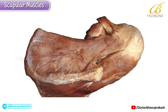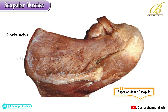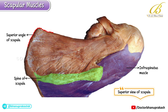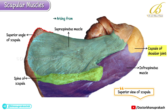This image shows the superior view of the scapula. The superior angle of the scapula is clearly visible, and the spine of the scapula can be seen on its posterior aspect. The lateral part of the spine has been removed to expose the infraspinatus muscle, which lies beneath it. Laterally, the infraspinatus blends with the capsule of the shoulder joint. Also visible is the supraspinatus muscle, arising from the supraspinatus fossa; its tendon extends laterally and merges with the capsule, contributing to the rotator cuff.